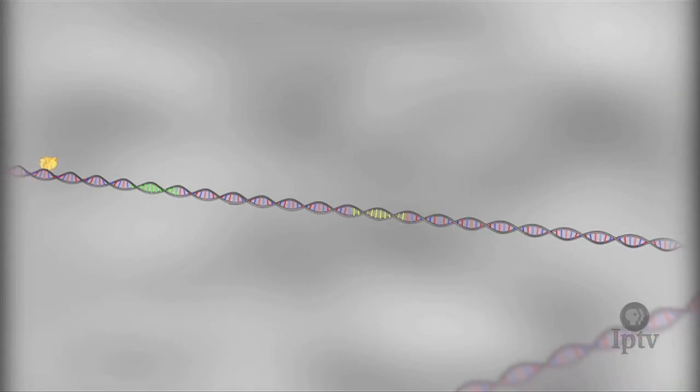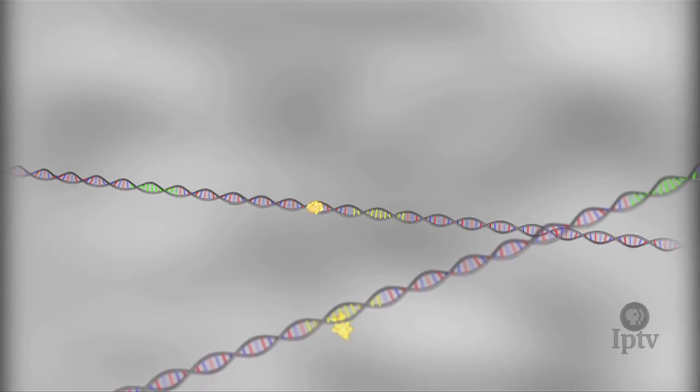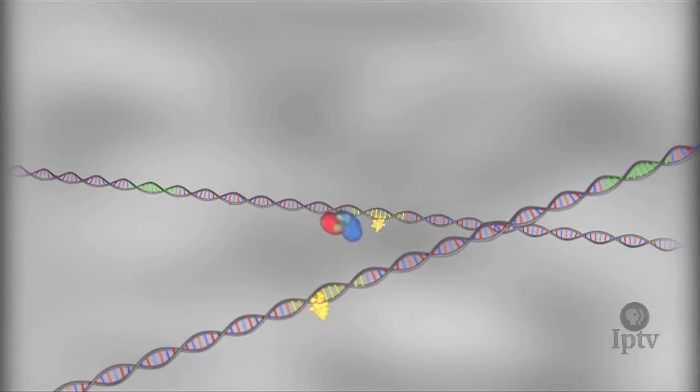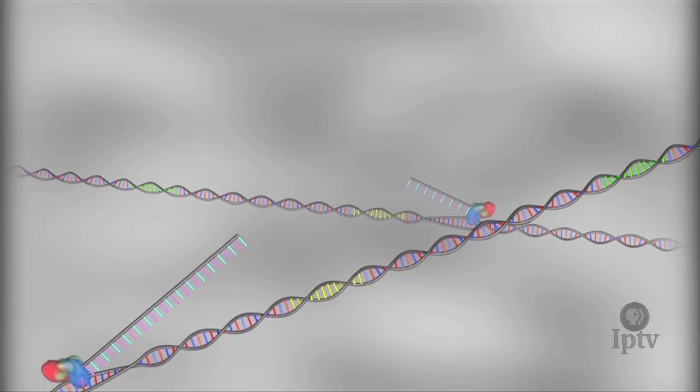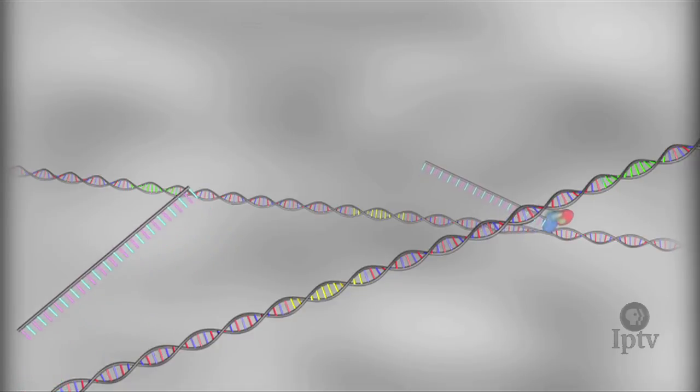The transcription factor then falls off the DNA, but it may bind again later. As you can see in this model, one transcription factor can sometimes turn on multiple genes located in different parts of the DNA. Transcription factor molecules are very important in turning on genes because they help start transcription, or the making of RNA.